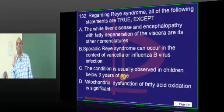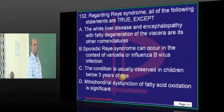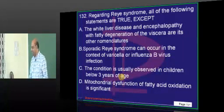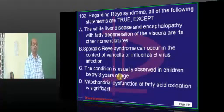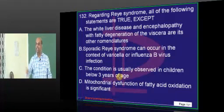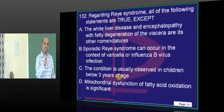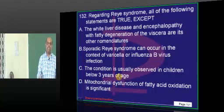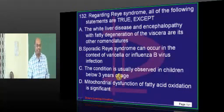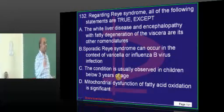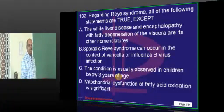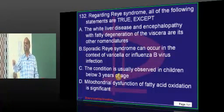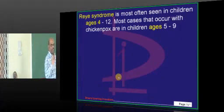Reye's syndrome, doctor — very, very interesting question. Who will give me the correct answer? Always, if age is there in the options it becomes acceptable. Remaining facts are all guessable. It is also called white liver disease and encephalopathy with fat degeneration. Influenza B and varicella are involved. What is the age? 5 to 12? Very good. Traditional question this is.